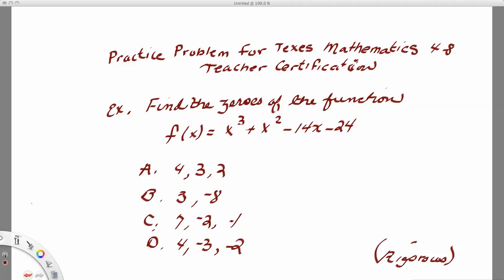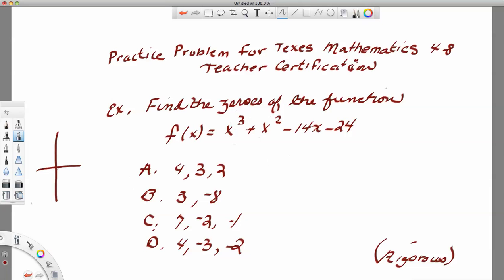Now to understand what a function is, a function is a graph where for every x value it only corresponds to one y value. For example, the graph of a circle is not a function because if I do what's called a vertical line test, if I draw a vertical line through the circle I see here that for this x value of 1 it corresponds to a y value down here and it corresponds to a y value here. So it's not considered a function.